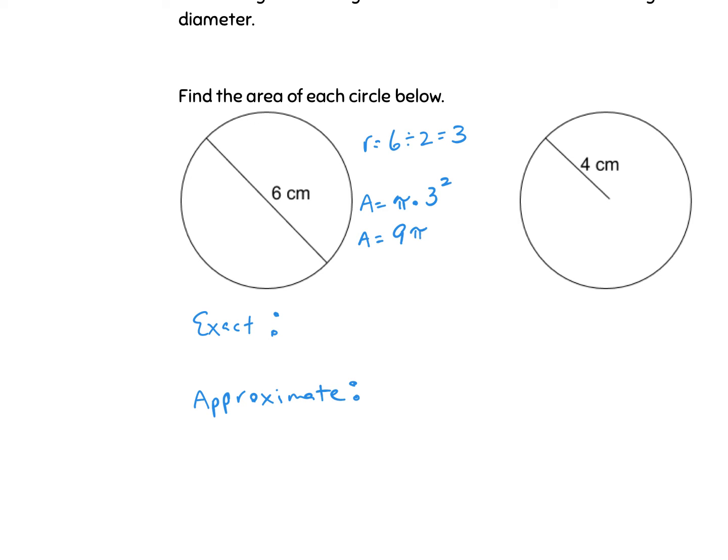So we have pi times nine and then I need to add my unit. So my exact measurement is nine pi centimeters squared. It's squared because we multiply the radius by itself. So whenever you multiply something by itself or something by another side length the units are squared. Now for approximate you're just going to plug in 3.14 to nine and when we do that we get 28.26. So in this case the approximate is 28.26 centimeters squared.